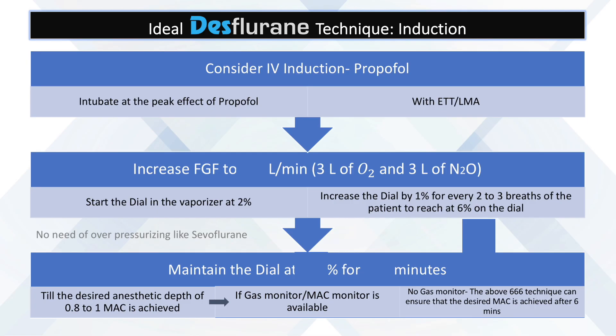Now let us see an ideal desflurane technique of induction. Literature says: consider intravenous induction with propofol, intubate at the peak effect of propofol with your endotracheal tube or laryngeal mask. Then increase the fresh gas flows to six liters per minute — three liters of oxygen and three liters of nitrous oxide — and start the dial setting in the vaporizer at 2%. Increase the dial by 1% every two to three breaths to reach 6% on the dial.